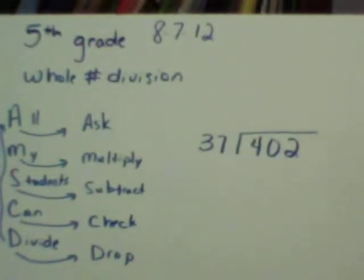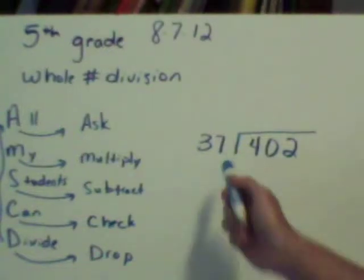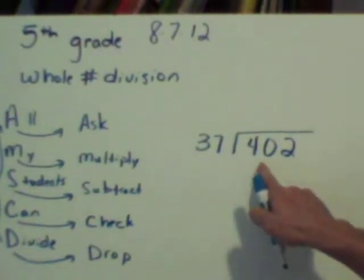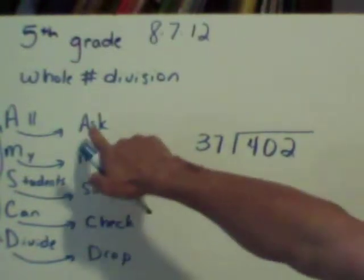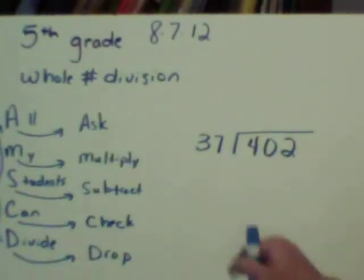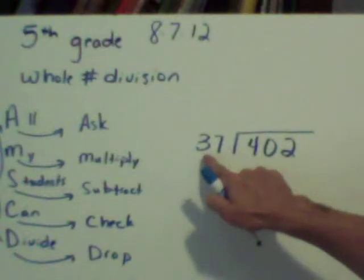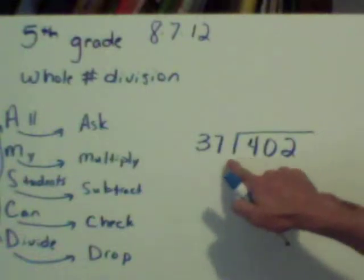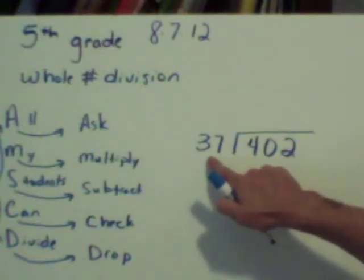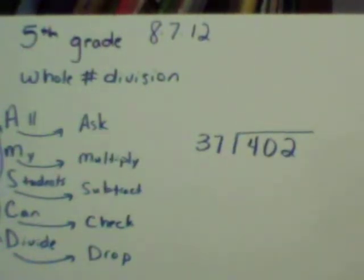I'm going to show you how you know when you're finished. We're going to take the practice problem over here. We have 402 divided by 37. I'm going to go to the first step, ask. I'm going to ask myself, how many times will 37 go into 4? Or how many groups of 37 can I make if I only have 4? Well, I can't make any.